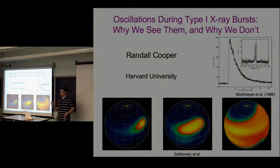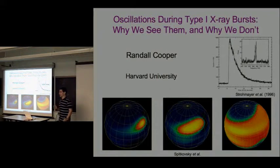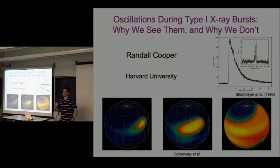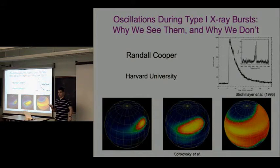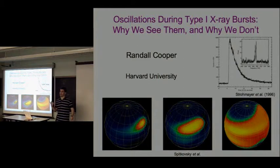One of the most exciting things, and the easiest thing you can derive from the oscillations, is that we think the oscillations correspond to pretty much the spin frequency of the neutron star. This would imply that this neutron star is spinning at about 363 hertz.